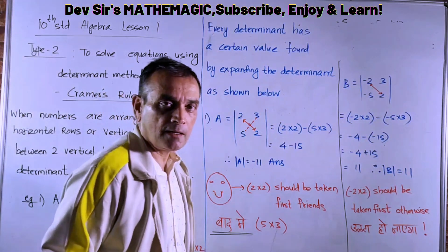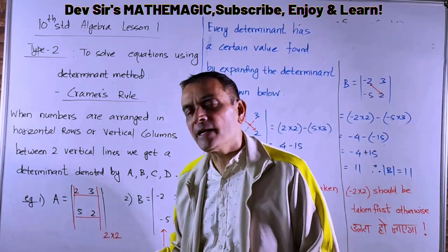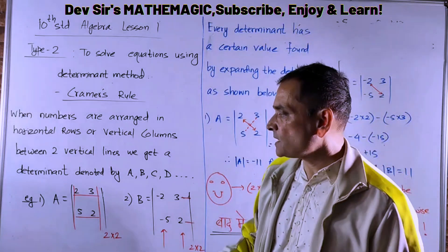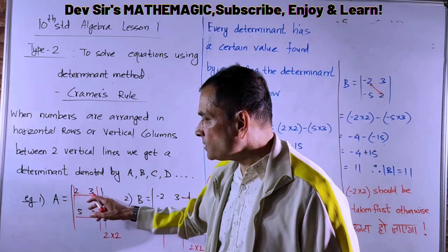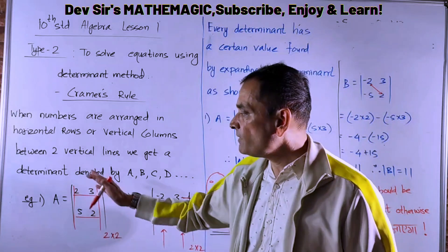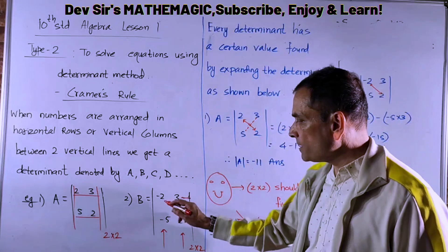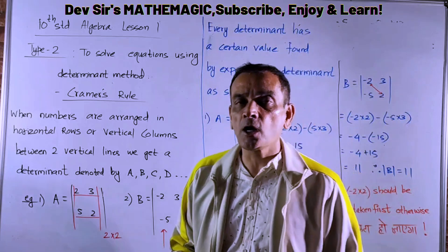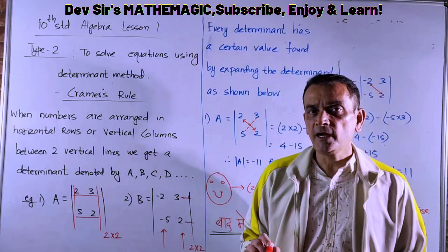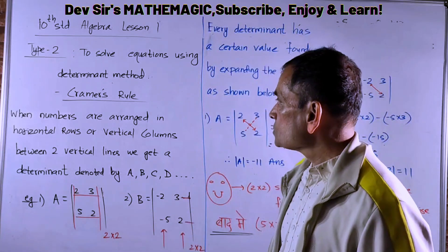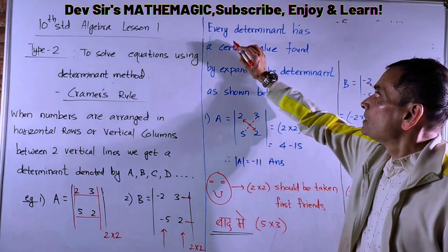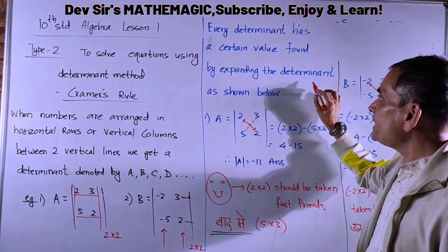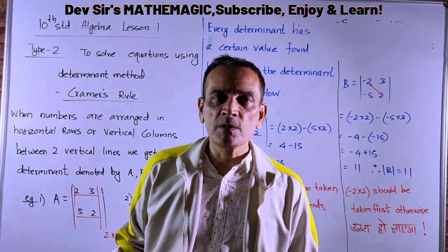So you understand: when elements are arranged — sometimes instead of numbers, elements like a, b, c, d are used — but usually numbers are there. When numbers are arranged in horizontal rows and vertical columns between two vertical lines, you get a determinant. Every determinant has a value. How do we find that value?